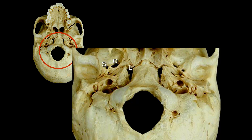Just below the foramen spinosum is the carotid canal, where the carotid artery travels through. And below the carotid canal is the jugular foramen — or jugular fossa. If we were to tip the skull, we could actually see the foramen itself, and that's where the jugular vein travels through.